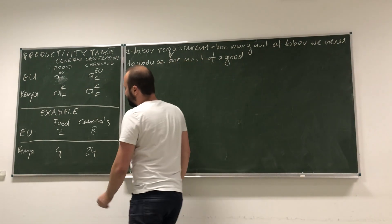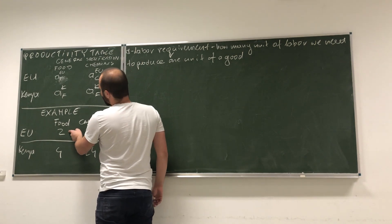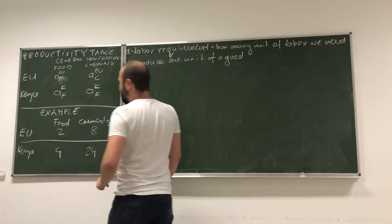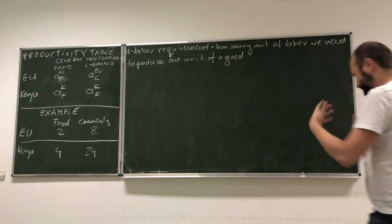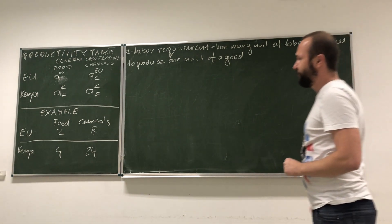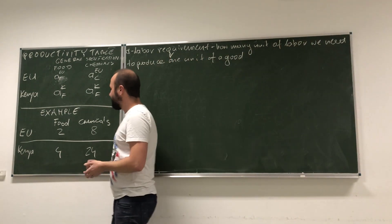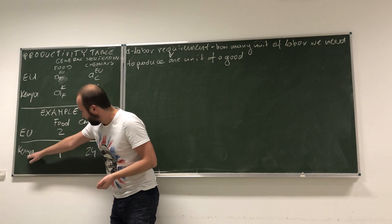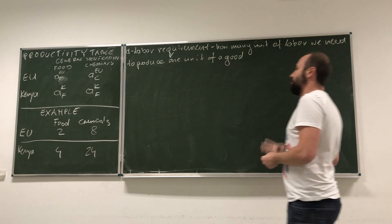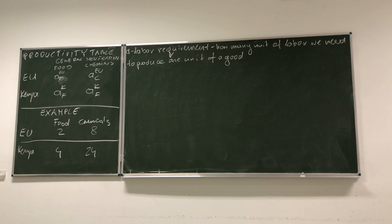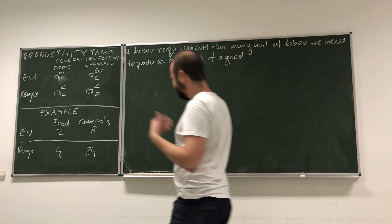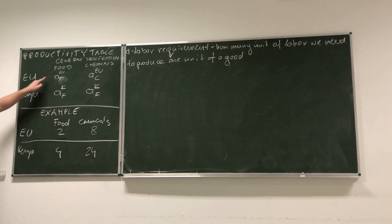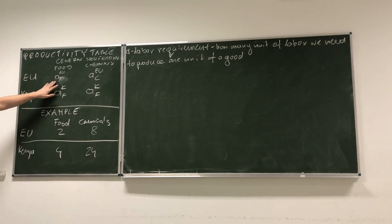Because the lower is the value of this, the better the country is in producing something. And think about it. Like, if you require, like in this example, just two units of labor to produce one unit of food, it means that you are doing something better than another country, Kenya, which requires four people. But before we go into the example, let's, because we will be using these expressions that you see over here quite a lot, what do they mean?